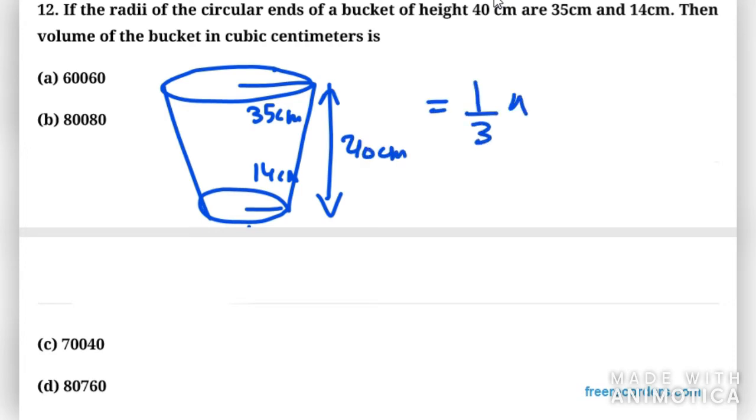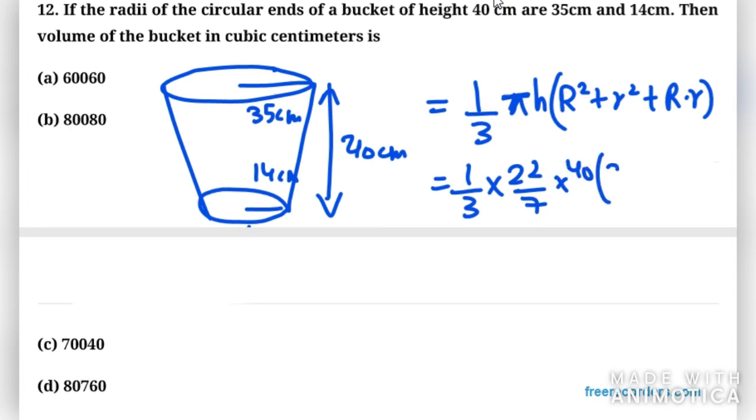We have the formula for it: 1/3 π h (R² + r² + Rr). So it will be 1/3 × π as 22/7 × h as 40 × (35² + 14² + 35×14).